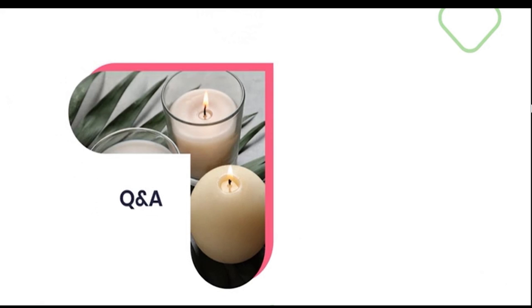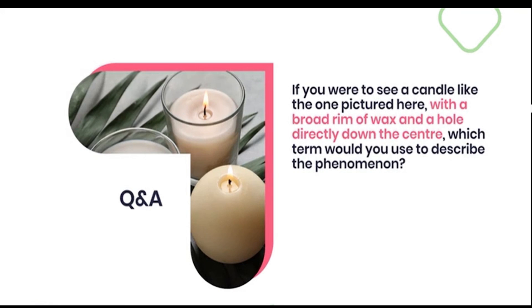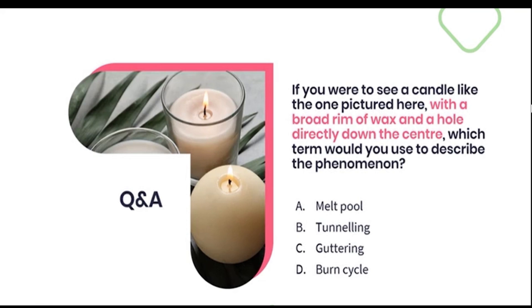Here's another multiple choice question. If you were to see a candle with a broad rim of wax and a hole directly down the centre, which term would you use to describe the phenomenon? A, the melt pool; B, tunneling; C, guttering; or D, burn cycle? The correct answer is B, tunneling — something that occurs when a full burn pool isn't allowed and a wick burns downwards too quickly.